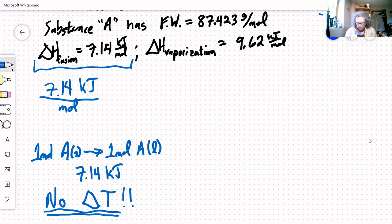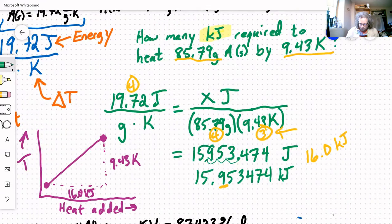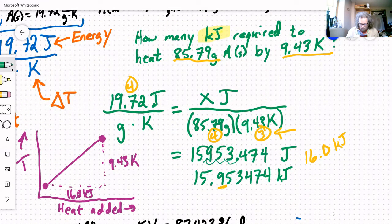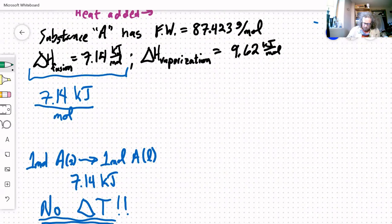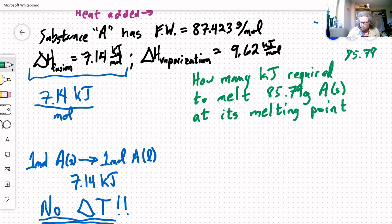So similarly, let's put together a problem here. How many kilojoules is required to melt 85.79 grams of a solid at its melting point? At its melting point is an important part of this.